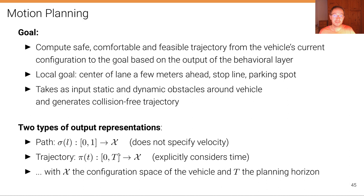So in contrast, the trajectory representation pi of t maps from zero to capital T, the target time, from that interval to the configuration space. In other words, the trajectory output representation explicitly considers time. It explicitly asks our controller to steer the vehicle such that at any time specified here as an argument to that function, we are close to the corresponding configuration that's predicted by that function.